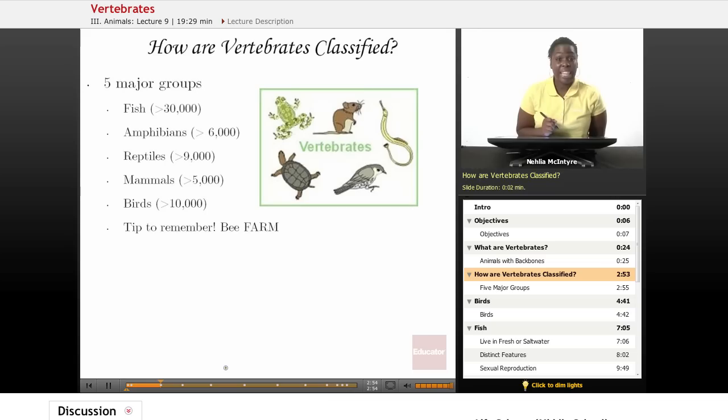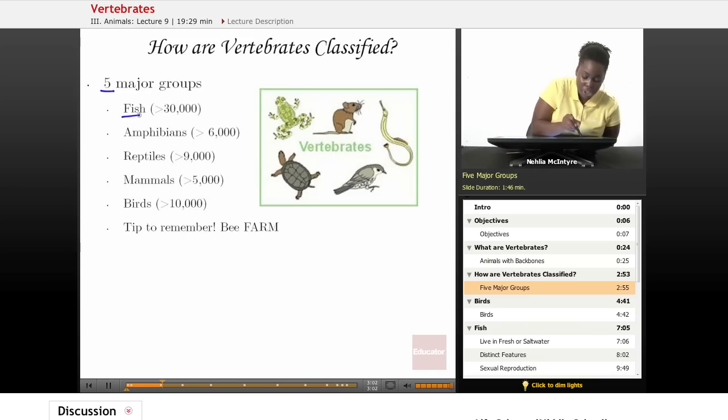How are vertebrates classified? Well, scientists classify vertebrates in five major groups. The major groups are named fish, amphibians, reptiles, mammals, and birds.